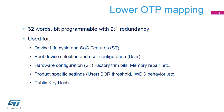The lower OTP area is 32 words, which are bit programmable only with 2-to-1 redundancy. Words 0 to 2 (CFG0 to CFG2) are reserved by STMicroelectronics to control the lifecycle and SOC features enabled in the product. Only one bit from CFG0 is accessible by the user to close the device after secret provisioning. Words 3 to 7 can be used to define boot device selection. Words 16 to 24 are used for hardware configuration, with word 16 including product-specific settings for the user. Words 24 to 31 are used for public key hash.